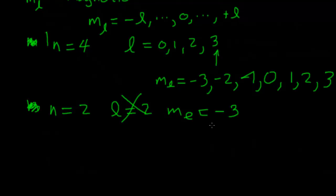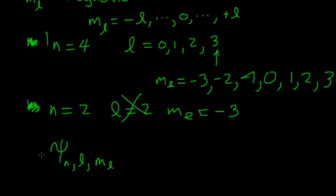Each set of quantum numbers says something about where we can find the electron, because it changes the wave function. These three quantum numbers label that wave function. The three quantum numbers specify which wave function we use, and that in turn tells us where we find the electron.